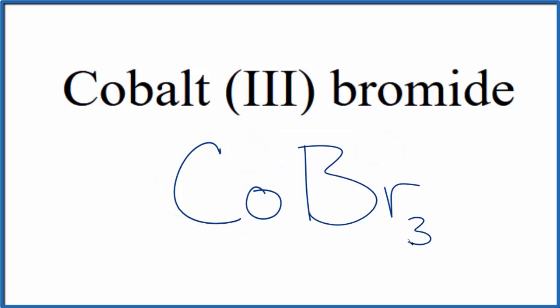If you were given the formula and asked to write the name, you know the bromide ion is one minus. You have three of them, so the cobalt, a transition metal, has to be three plus, so you write that Roman numeral three. This is Dr. B, and thanks for watching.